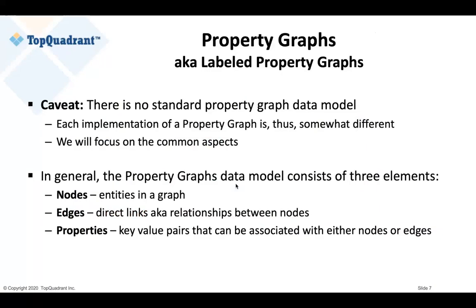Having talked about knowledge graphs and pointing out that they are based on standards, there is a standard data model behind RDF knowledge graphs. With respect to property graphs, I want to make a caveat that there is really no de facto or de jure standard property graph data model. There are quite a number of different implementations all calling themselves property graphs or labeled property graphs. There are lots of similarities in those implementations, but also some differences depending on a particular vendor product. What I will talk about today will tend to be facts that are similar or identical across different implementations.